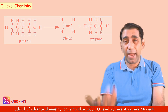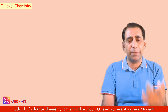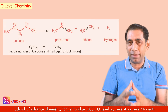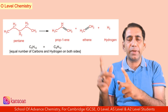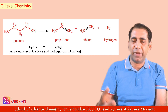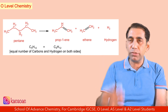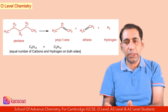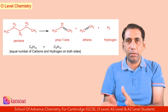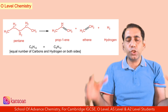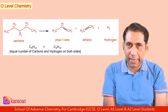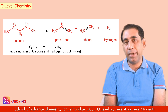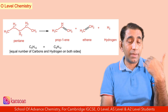A molecule may also be cracked into more than two fractions. For example, if this molecule is cracked into three parts, we can produce hydrogen, propene, and ethene. So when cracking a hydrocarbon alkane into three fractions, at least two of the fractions will contain a carbon–carbon double bond — they will be alkenes.